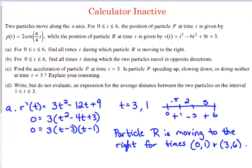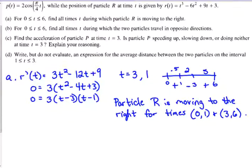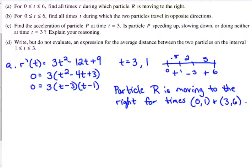Particle R is moving to the right for times 0 to 1 and 3 to 6. You get 1 point for the derivative, you get 1 point for the answer. Part B. Find all times during which the 2 particles travel in opposite directions. So I've already figured out where R is traveling. I need to do the same process for P now.